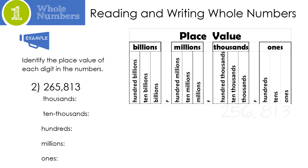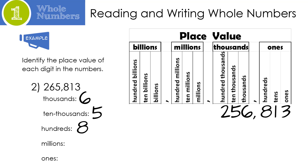Let's look at this larger number. Once again, until you get really good at it, you should write it in the place value chart. Six is in our thousands place. Five is in the ten thousands place. Eight is in our hundreds place. And what number is in the millions place? Well, let's look. Here's my millions place, and we don't have a number, so we are going to write none. We don't write zero because zero is a digit — it's a number. So we write none. And finally, three is in our ones place.